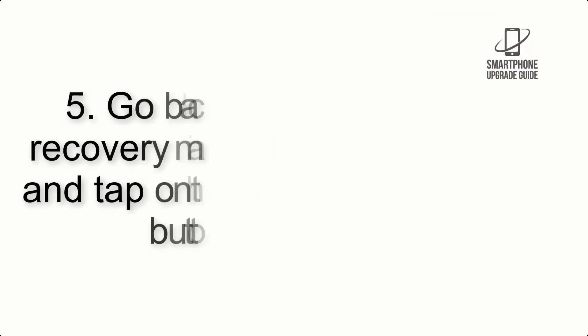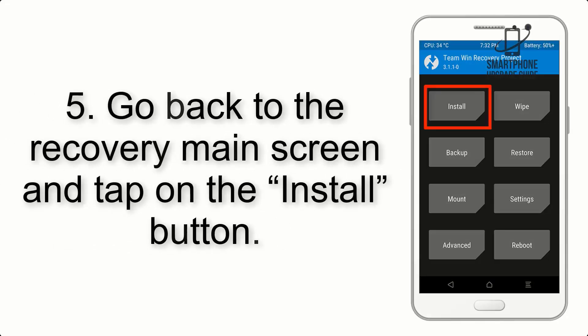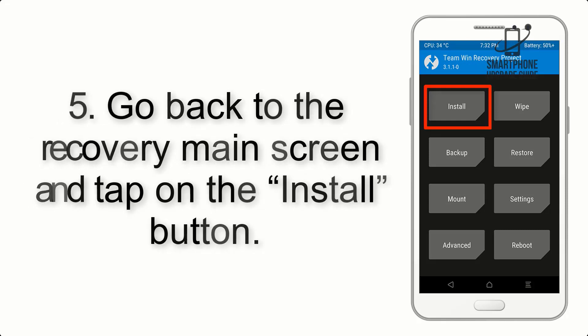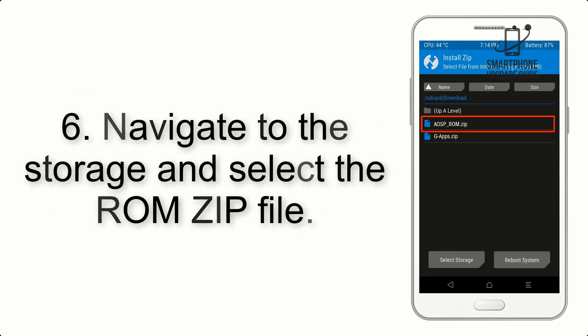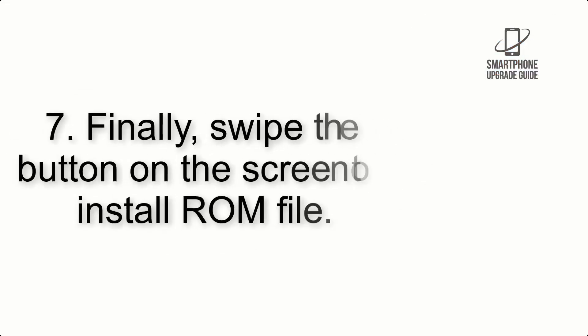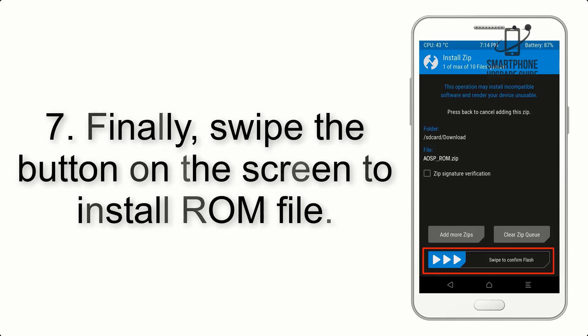Step 4: Swipe the button to wipe the device. Step 5: Go back to the recovery main screen and tap on the Install button. Step 6: Navigate to the storage and select the ROM zip file.